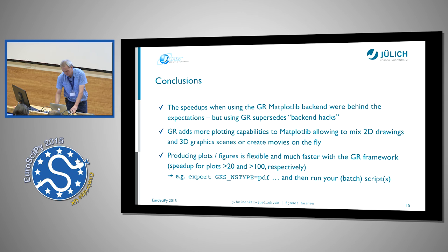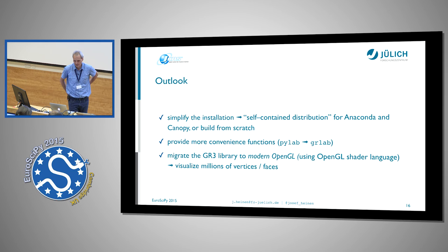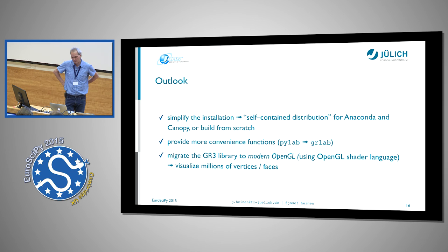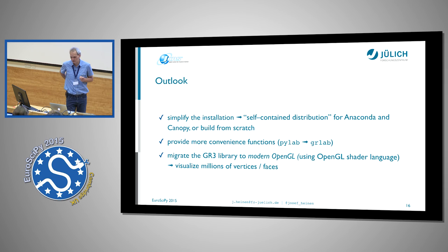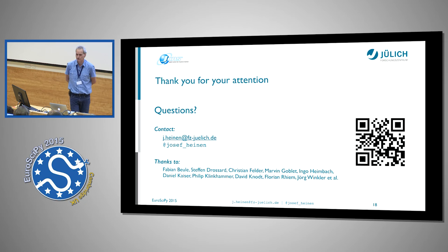It's very easy because we simply have to set an environment variable. The outlook is that we want to create a self-contained distribution for Anaconda and Canopy and simplify installation. There are already packages on the Anaconda servers, but we want to make it easier to install the software. We want to have more convenience functions which are MATLAB-like, and we want to migrate the GR3 library, which is currently based on modern OpenGL, to use OpenGL shaders. Here are some resources, and if you have questions, I'm still here. Thank you.